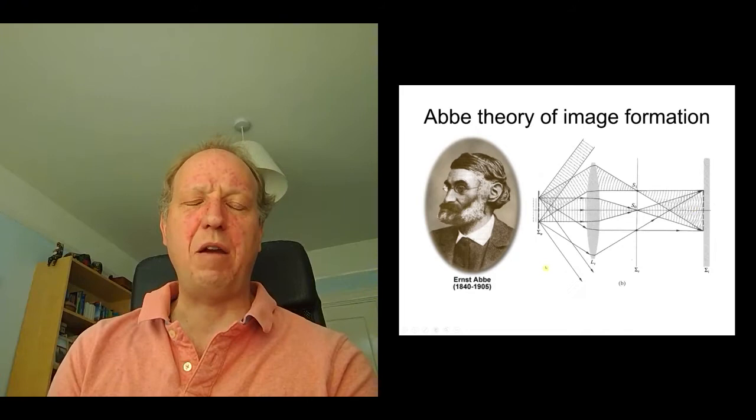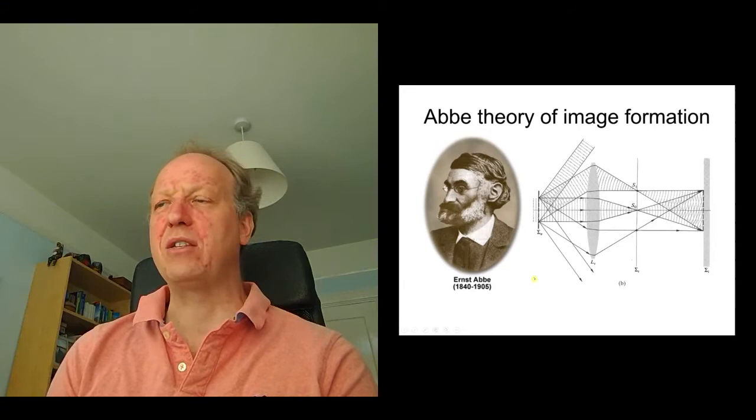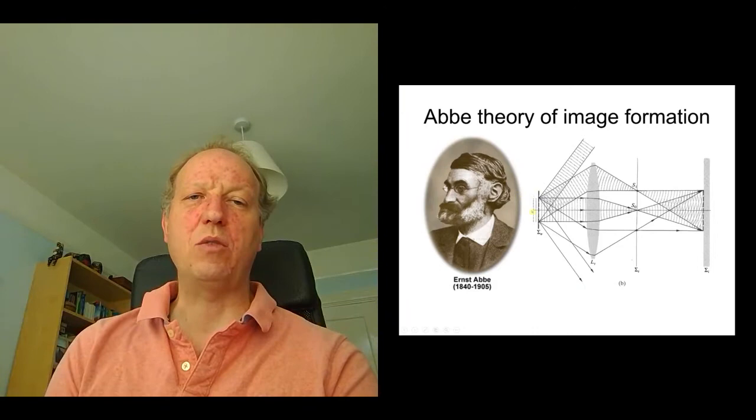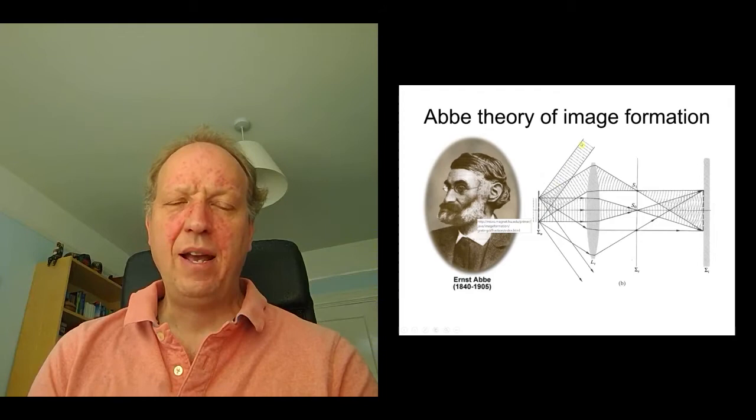But let's consider the experiment that Abbe was thinking about. And here we've got what we call a diffraction grating, which is just a screen really, with lots of equally distant space slits in the screen. And Abbe was really thinking of this as being an object that we might want to form an image from in a microscope. So we illuminate our object with some radiation. And because we've got an array of equally spaced slits, we get diffraction. So we get a set of diffracted beams.